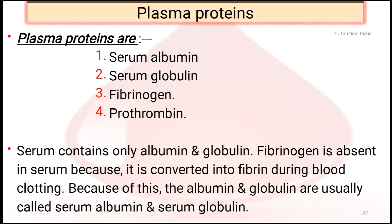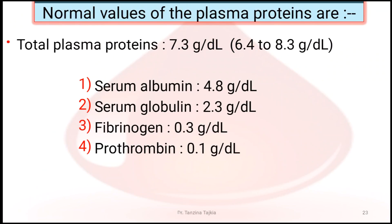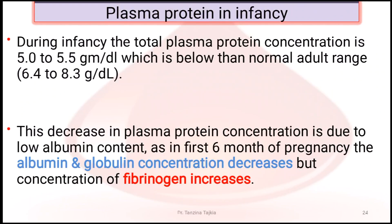There are four types of plasma proteins: serum albumin, serum globulin, fibrinogen, and prothrombin. Serum contains only albumin and globulin. Total plasma protein is about 6.4 to 8.3 g/dL; albumin is 4.8 g/dL; serum globulin 2.3 g/dL; fibrinogen about 0.3 g/dL; prothrombin about 0.1 g/dL. During infancy, total plasma protein concentration is about 5 to 5.5 g/dL, below normal adult range, due to low albumin concentration.